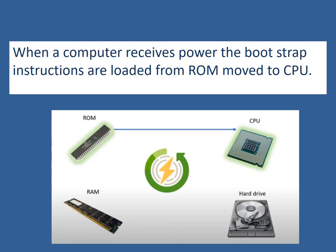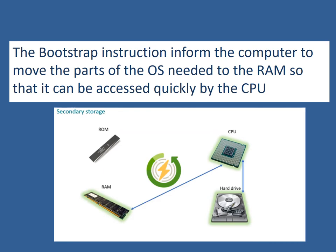So we've already covered this — when a computer receives power, the bootstrap instructions are loaded from ROM into the CPU. It is in fact the secondary storage, the hard drive, that stores the operating system: Microsoft Windows, Linux, UNIX, iOS, or Android. The parts of these operating systems that you need are then loaded into RAM so they can be accessed quickly by the CPU. Remember, RAM holds the current programs that we're working in, but also the operating system.